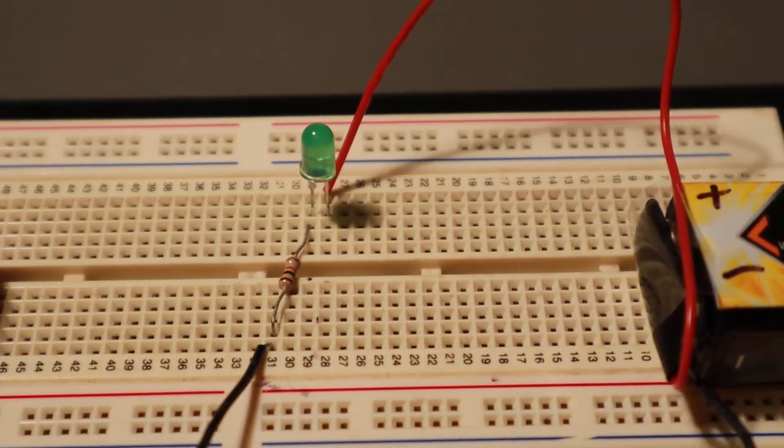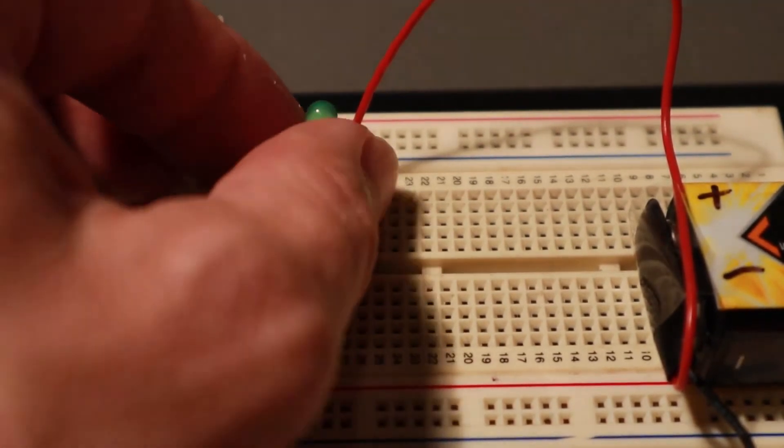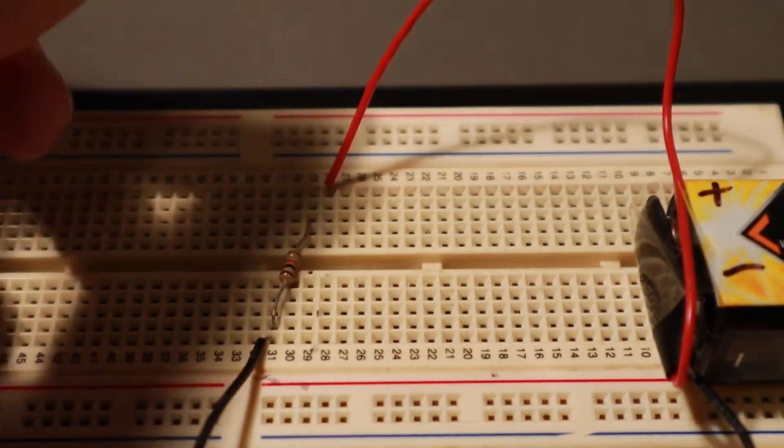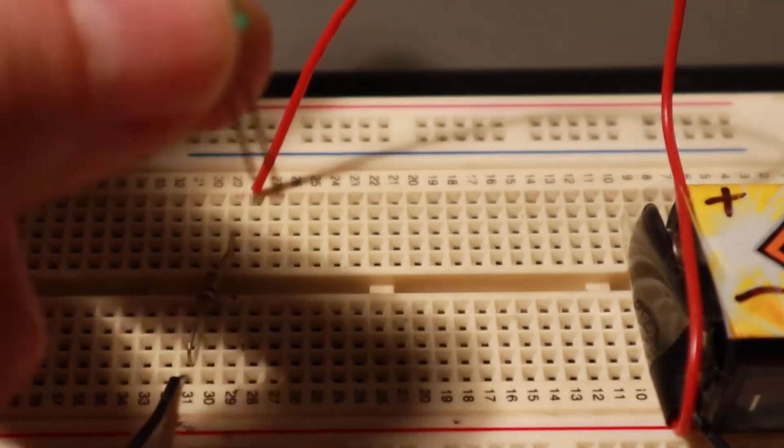That means the diode part of it is reverse bias. If we just turn it around, so the legs are pointing the other way.